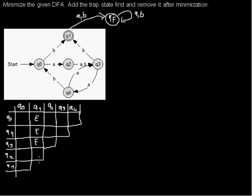The same applies to all other comparisons with Q1. If you compare two states and one is a final state and the other is not, then epsilon gives you the proof that those two are not equivalent. So here is Q1 with Q0, and now we have compared all states with Q1.